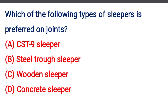Next question: Which of the following types of sleeper is preferred on joints? Option A: CST-9 sleeper, Option B: Steel through sleeper, Option C: Wooden sleeper, Option D: Concrete sleeper. The correct answer is Option C: Wooden sleeper.